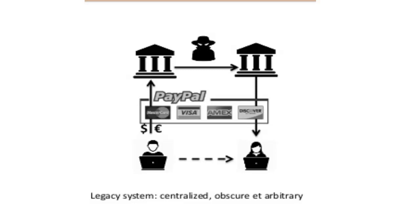In this example, PayPal is the trusted third party and it has a centralized database or ledger that it uses to keep track of the transactions. We use PayPal because we trust them and we trust that they will store and protect our money and send the right amounts when we ask.